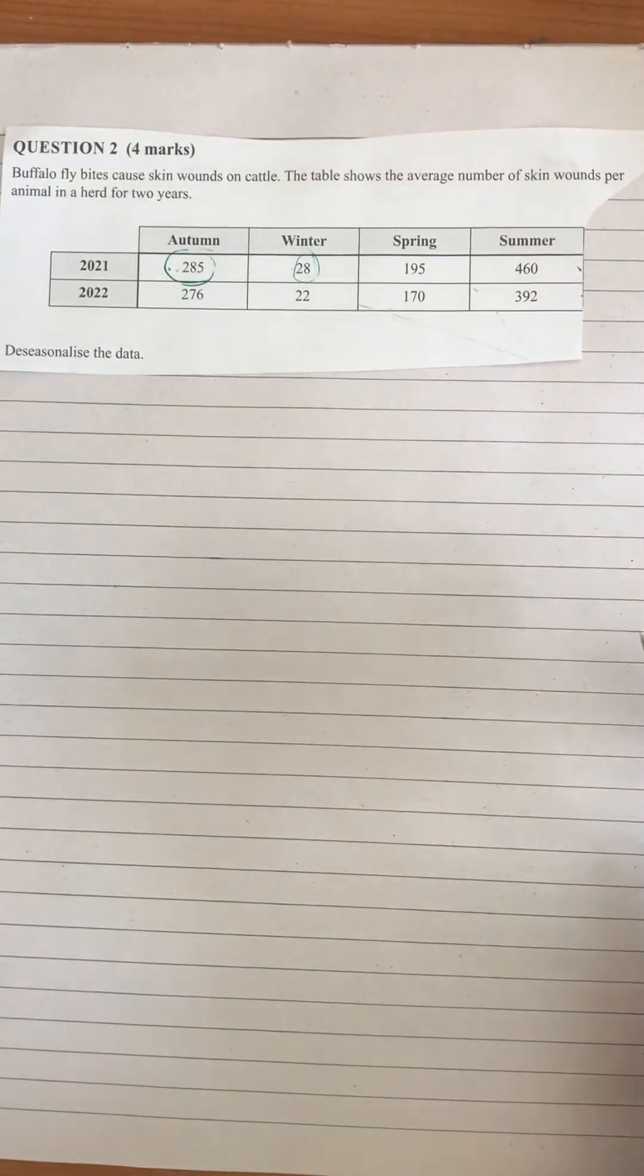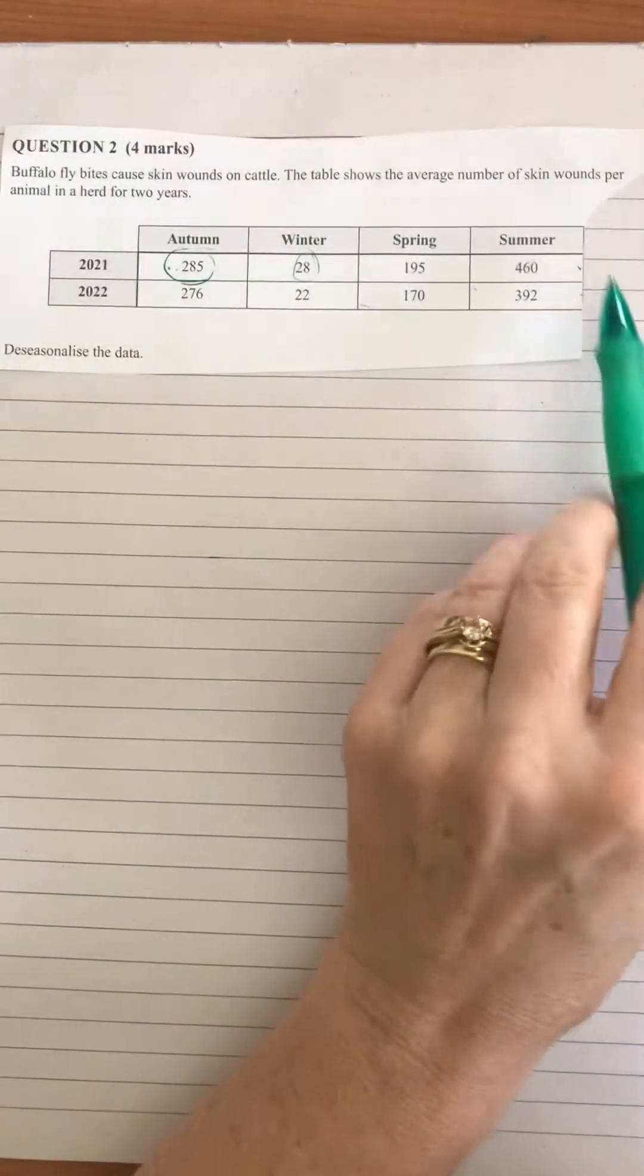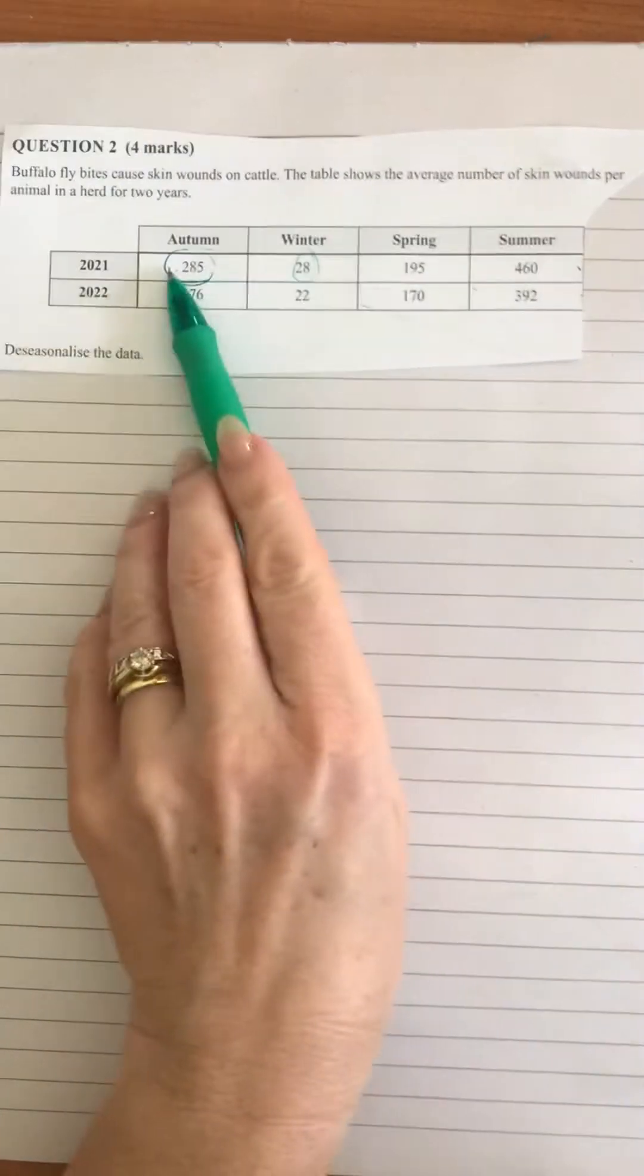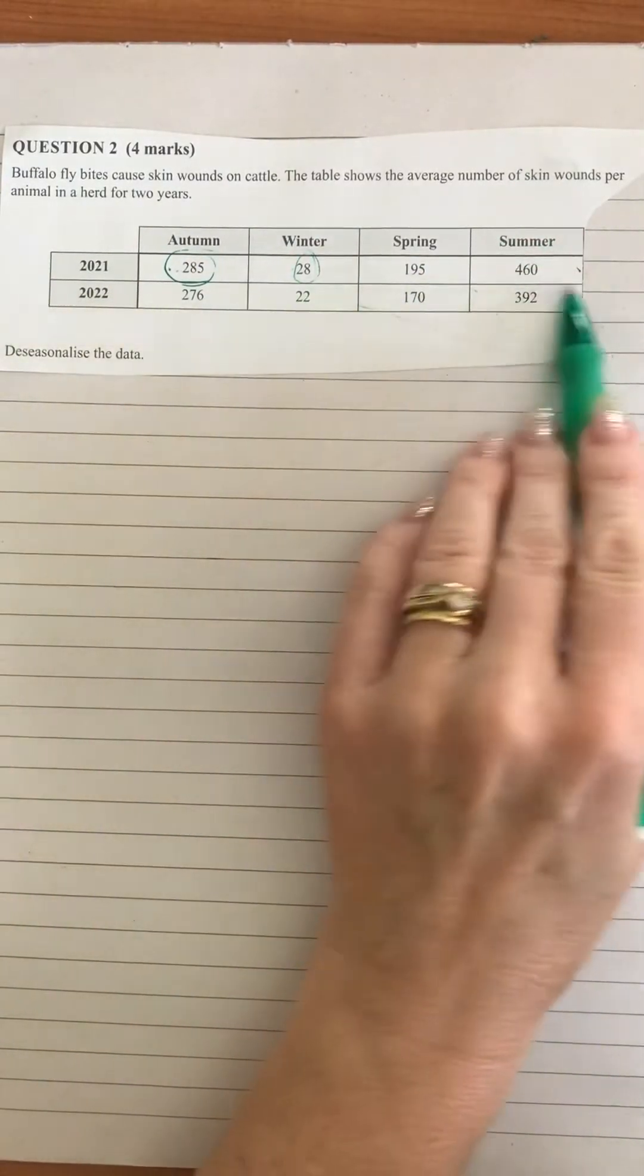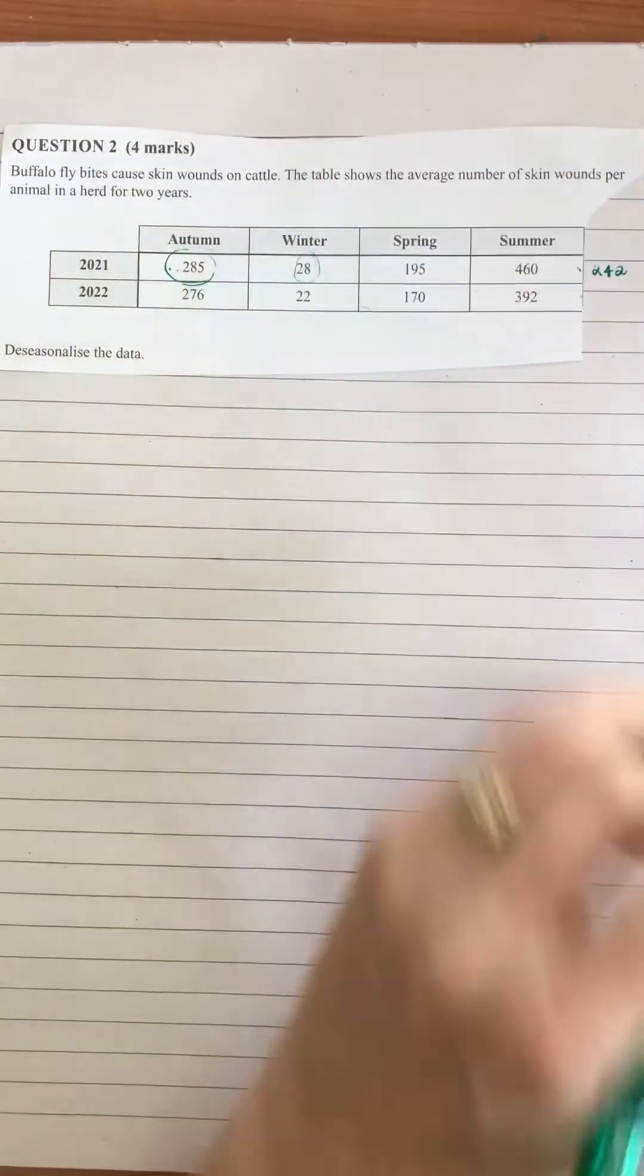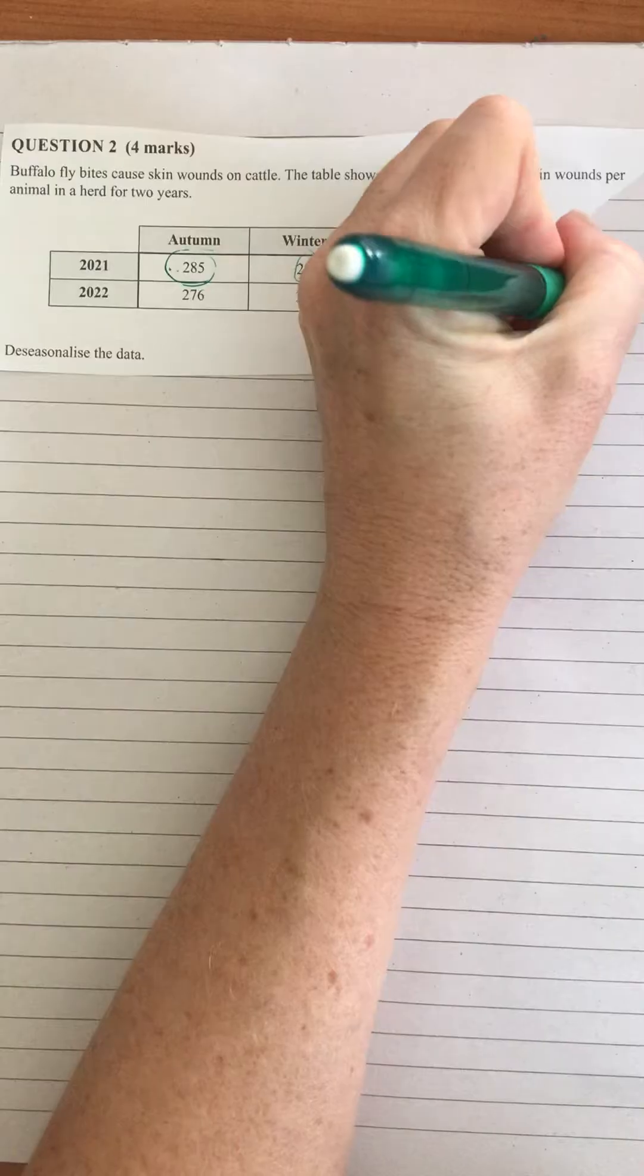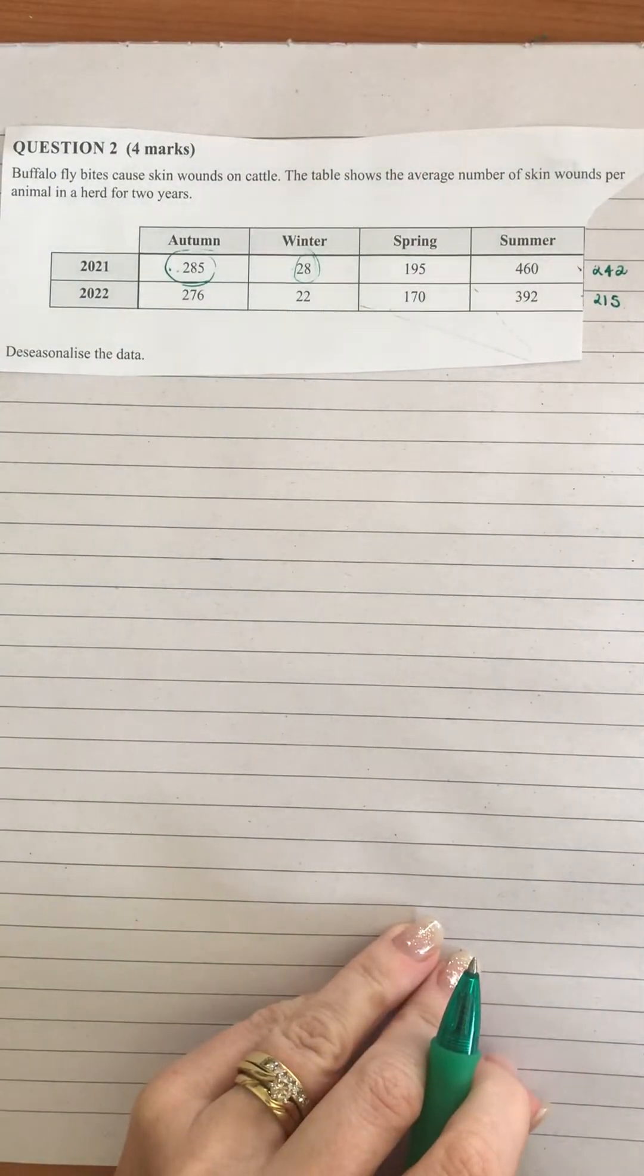First step, we need to find the average for each year. We're going to add those four numbers together and then divide by four. For this row we're going to get 242 when we add them together and divide by four, and for this row we're going to get 215 when we add them together and divide by four.